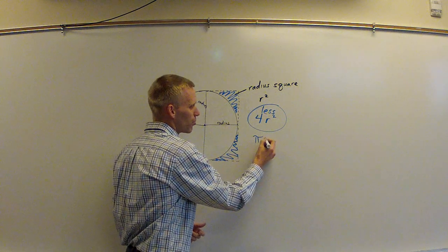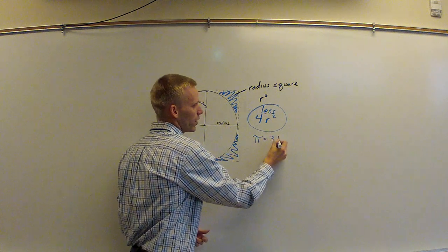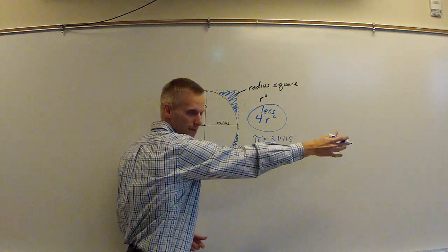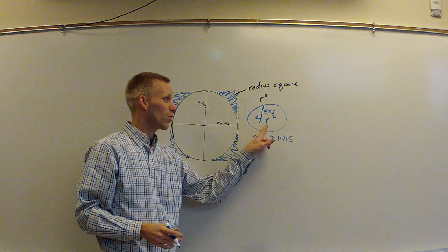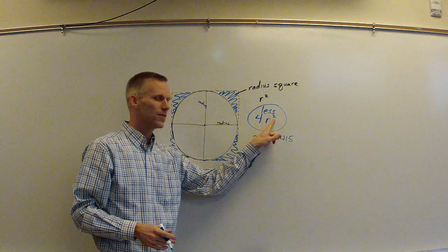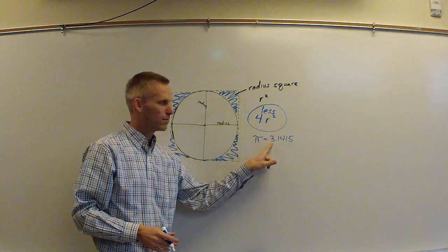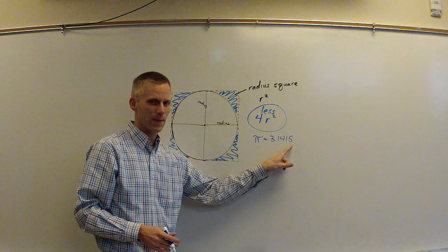You know that pi is approximately 3.1415 and so on. Now, you'll notice that this four radius squares is awfully close to three, well, a little bit more than three.